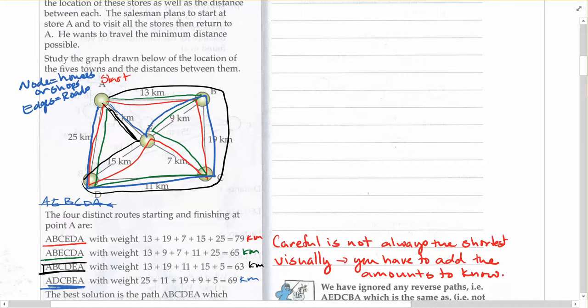So this one ends up being our traveling salesman, the route that you'd want to take because it's the shortest path possible.